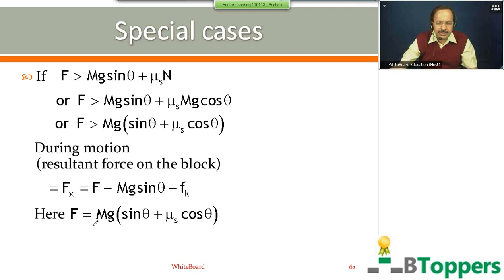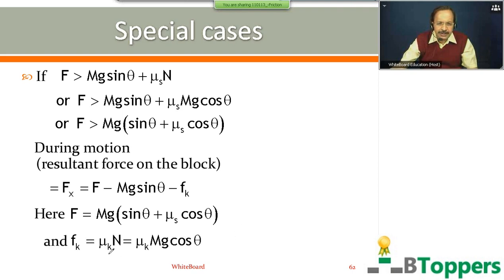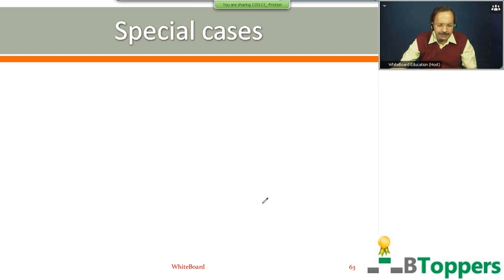Here the force on the block equals the minimum force needed to just start the block moving up along the inclined plane, which is equal to mg(sin θ + νs cos θ). And fk, the magnitude of kinetic friction of the block during motion, equals νk times N, or νk times mg cos θ.